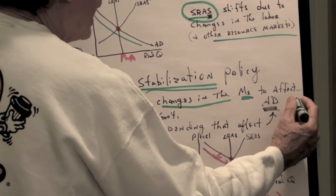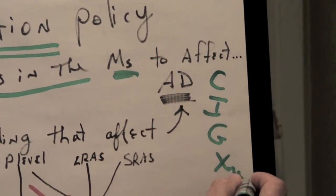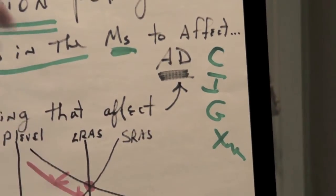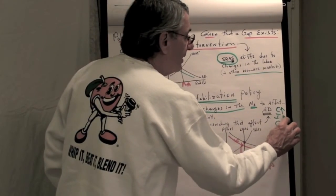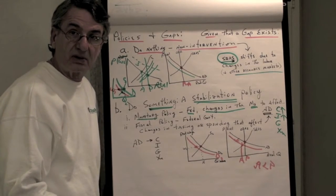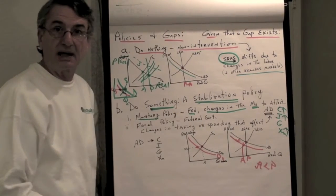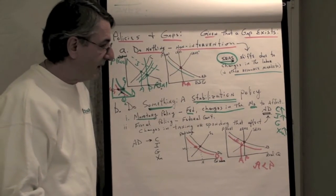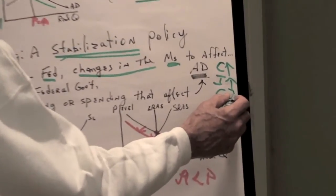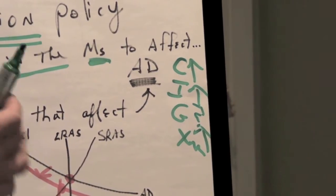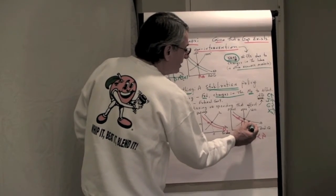Because aggregate demand is composed of consumption, investment, government, and net exports. And when the interest rates go down, that induces consumers to spend more, other things constant. It will cause businesses to spend more money on investment goods. And for reasons I can't get into right now, it will cause net exports to rise as well. Now, if any or several, I'm not sure what happens to the government when interest rates change. But if any or all of these components of aggregate demand increase, that shifts the aggregate demand to the right.